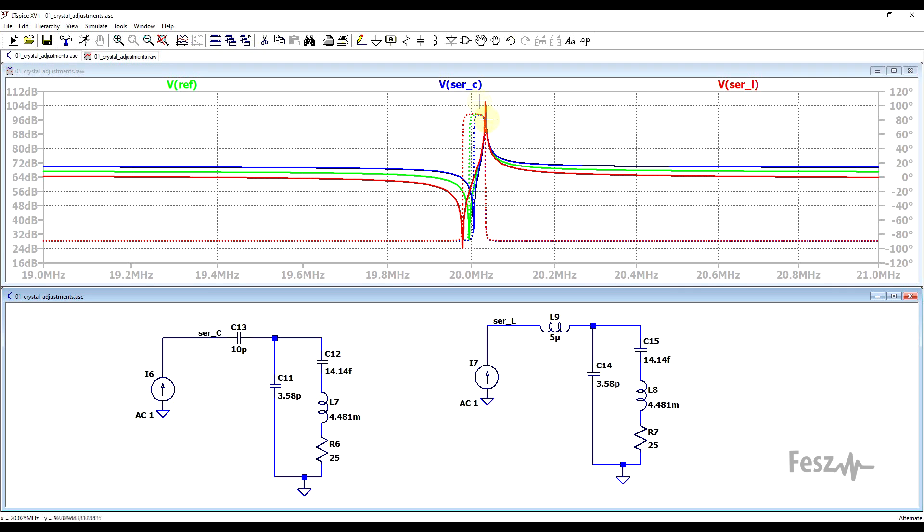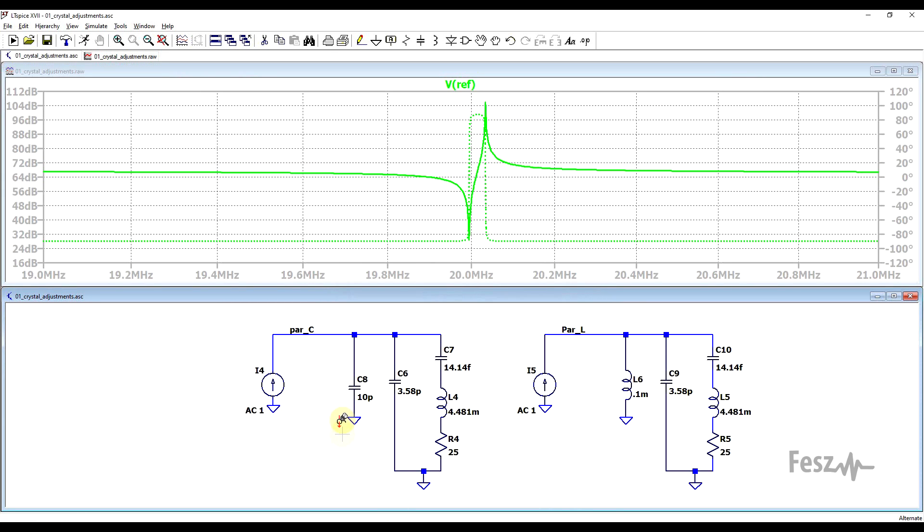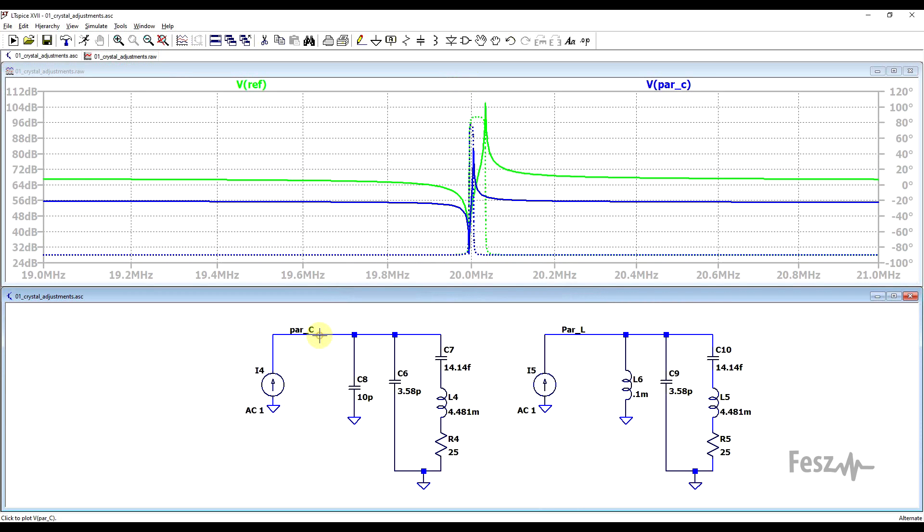Now, if we do want to affect the parallel resonance, we need components to be added in parallel with our initial circuit. So, starting off with a circuit with a parallel capacitor, if we look at the impedance of this structure, we can see that adding the capacitor in parallel has moved the parallel resonance to a lower frequency. And while in a similar fashion, if we now add a parallel inductor, this moves the parallel resonance to a higher frequency. And while in both cases, the series resonance has remained unaffected.